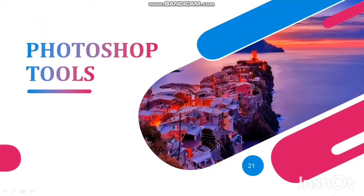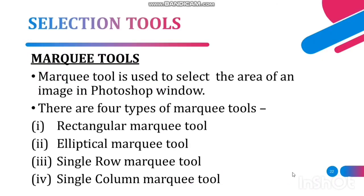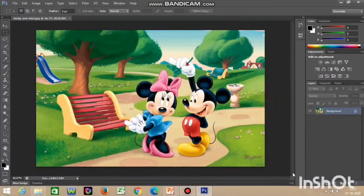The tools in Photoshop can be categorized into: selection tools, crop and slice tools, measuring tools, retouching tools, and painting tools. Starting with selection tools — these are used to select areas within your image for editing. Under the Marquee tool we have: Rectangular Marquee, Elliptical Marquee, Single Row Marquee, and Single Column Marquee. Other selection tools include Lasso, Polygonal Lasso, Quick Selection, and Magic Wand.